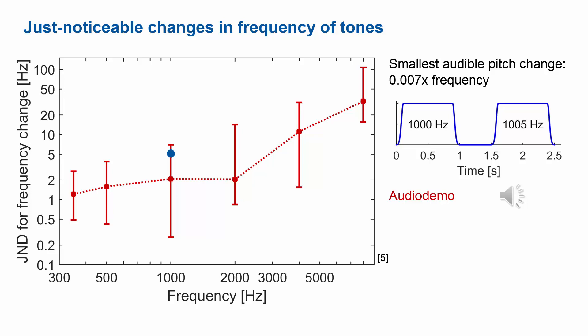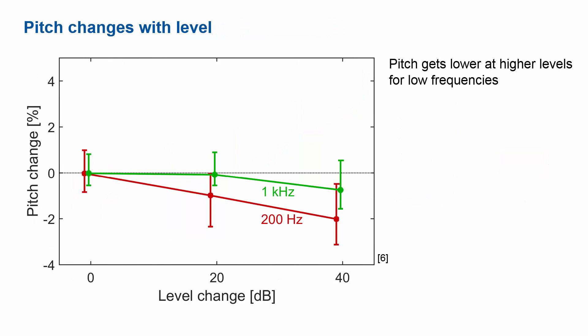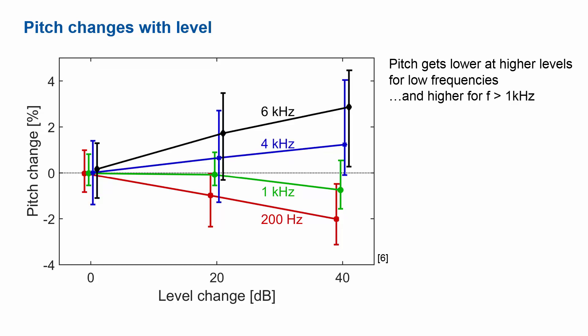Pitch is not set in stone — it's not just directly the frequency. It depends on a number of parameters. Pitch changes with level: if we have a low-frequency tone of 200 Hz and we increase its level, pitch changes downwards by up to 2%, which is quite pronounced. On the other hand, if we have a high-frequency tone and increase the level, pitch shifts upwards — it gets higher at a higher level.